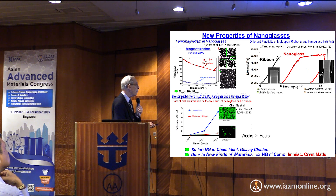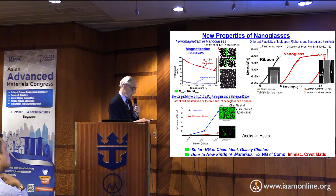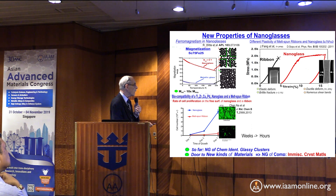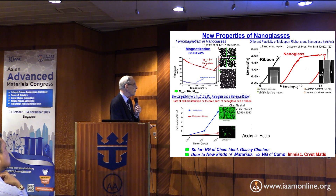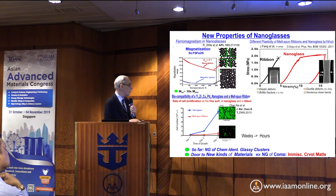Here are the mechanical properties. This is a melt-spun ribbon — a brittle glass. When you take it and pull it, it just fractures, as you know. When you take a nanoglass, it's a very ductile material and it flows ten to twenty percent. When you look at the deformed specimen, it has about the structural size of a piece of gold or copper.